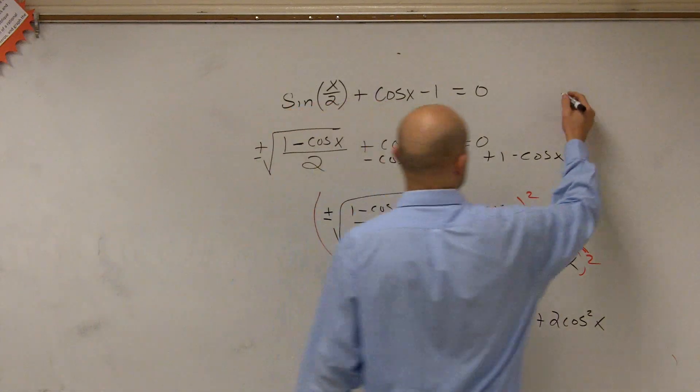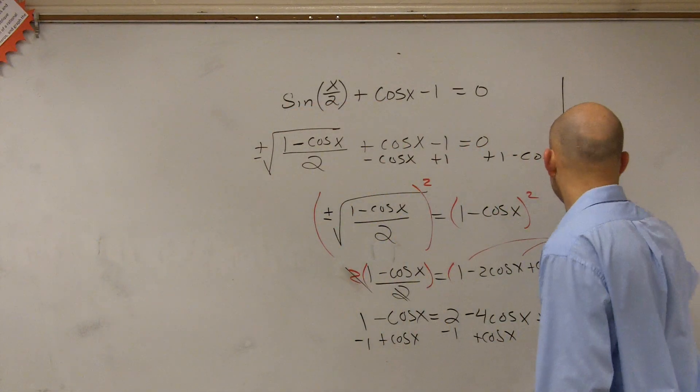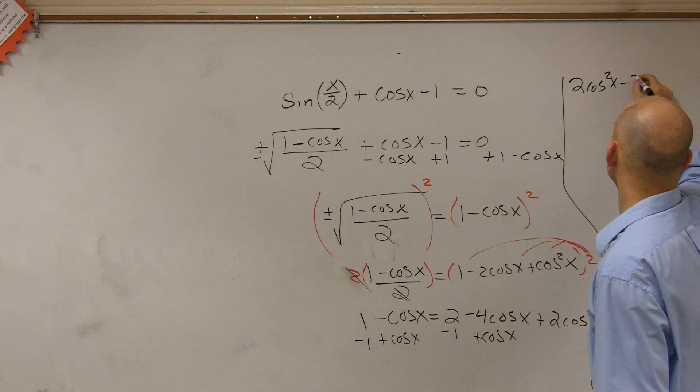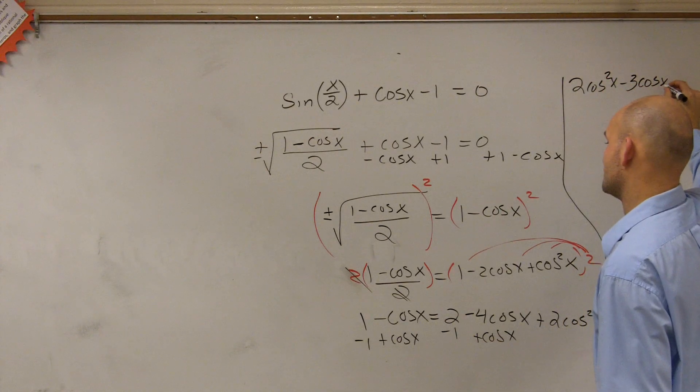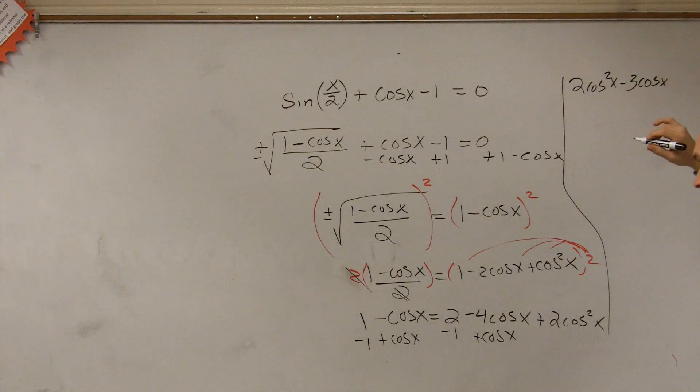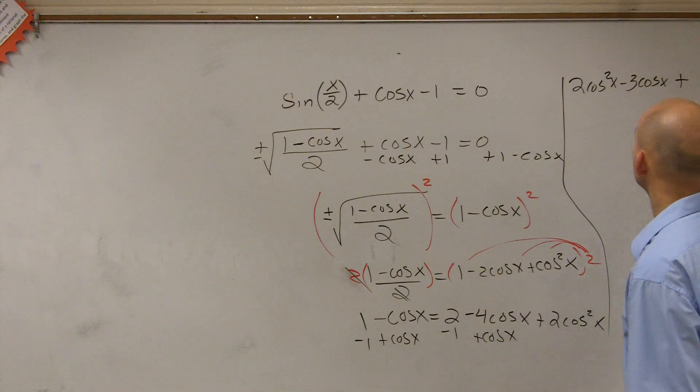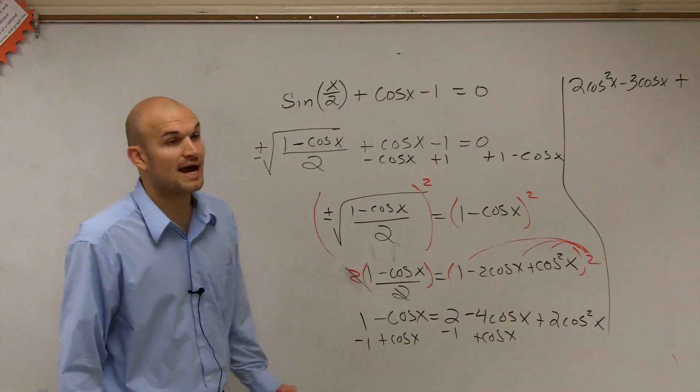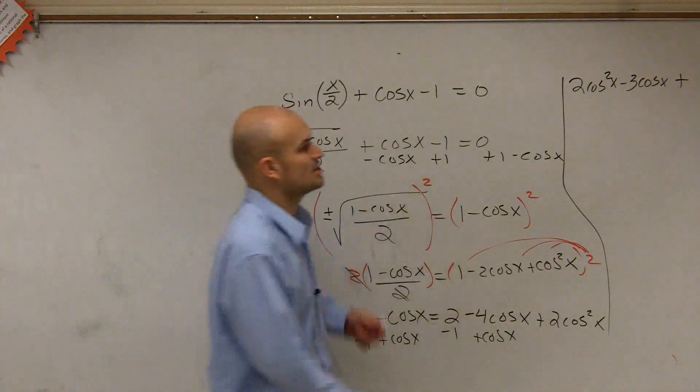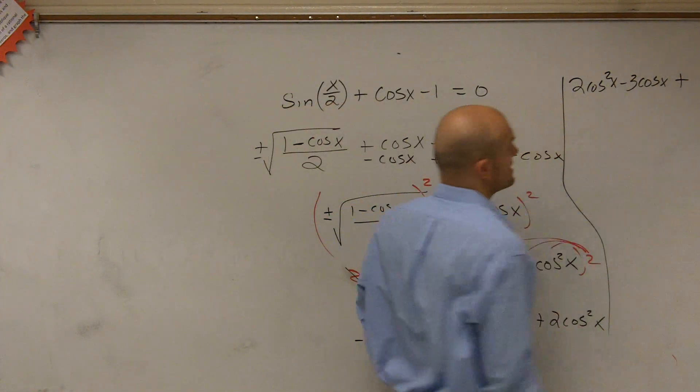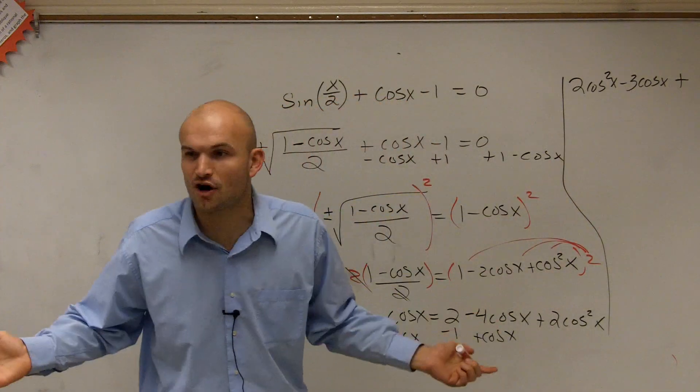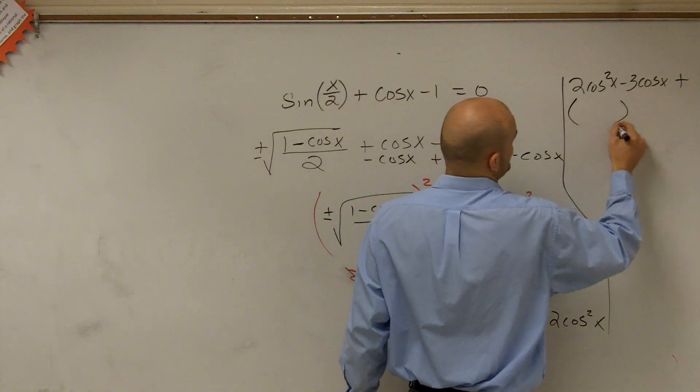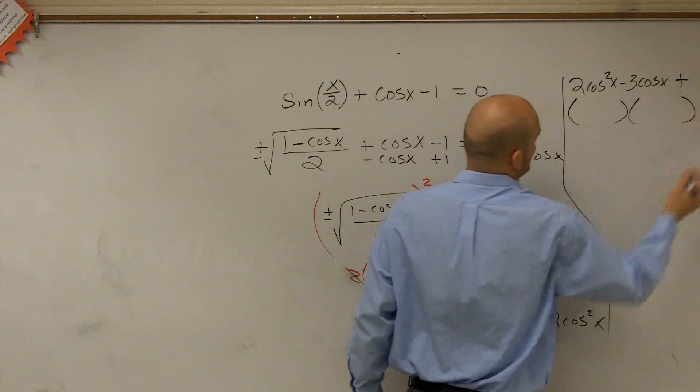So therefore, now what I'm going to have, I'll write this kind of over here, is I'll have 2 cosine squared of x minus 3 cosine of x plus 1. So now we've got to go and factor this. Oh, I'm sorry, equals 0. So now we've got to say, well, how can I solve for x? Well, I can't solve it by using inverse operations. I'm going to have to use factoring. So you've got to factor this to two different binomials that equals 0.